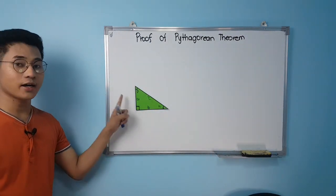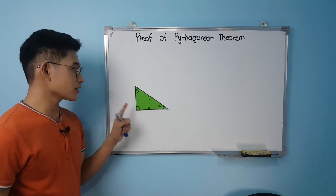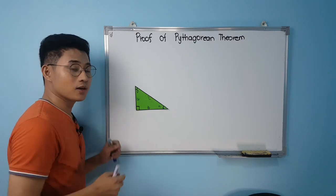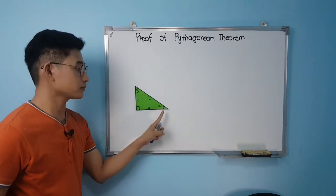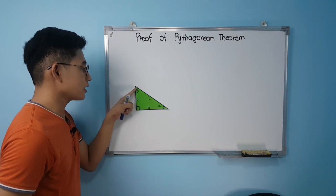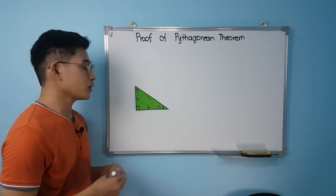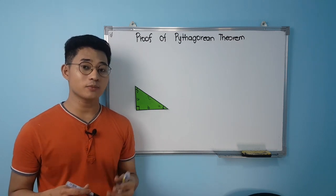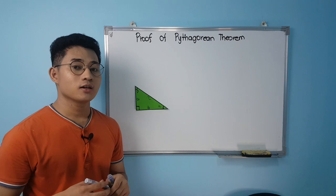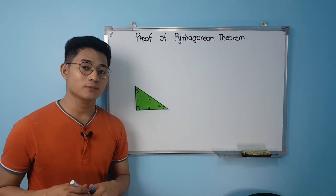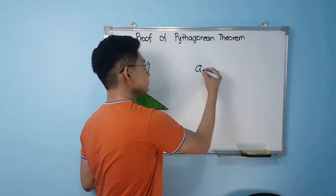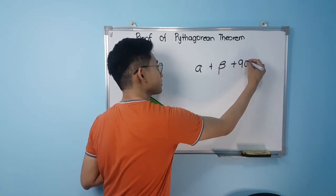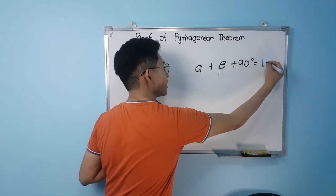Let's begin with this right triangle, which has 90 degrees — this is the right angle. Let us call this angle alpha and this other angle beta. We know that the sum of the interior angles of a triangle equals 180 degrees, so we can say that alpha plus beta plus 90 degrees equals 180 degrees.